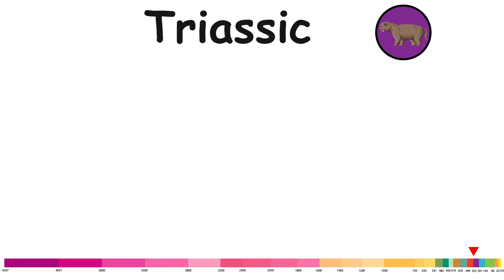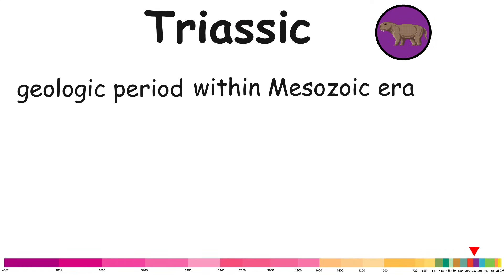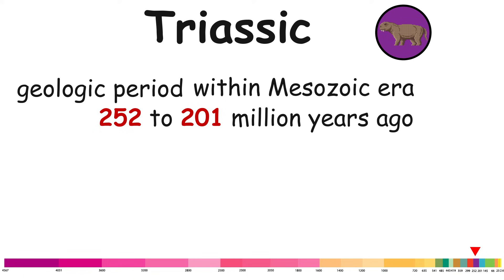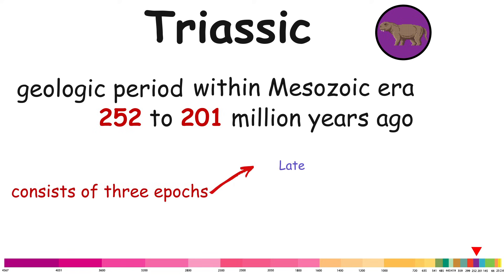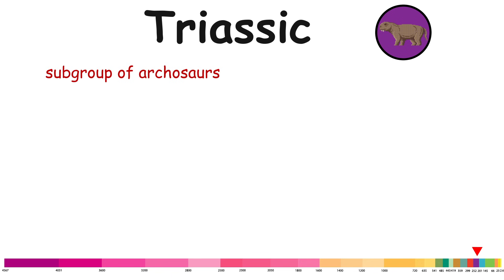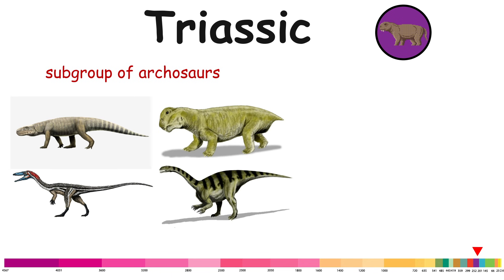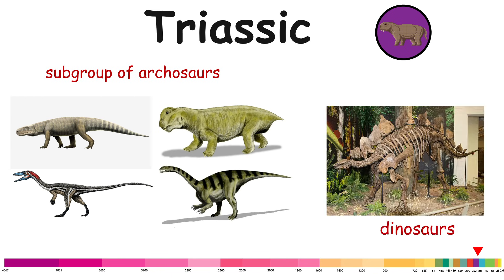Triassic. The Triassic is a geologic period within the Mesozoic era, spanning approximately from 252 to 201 million years ago. It consists of three epochs: Late, Middle, and Early. A specialized subgroup of archosaurs called dinosaurs first appeared in the Late Triassic.